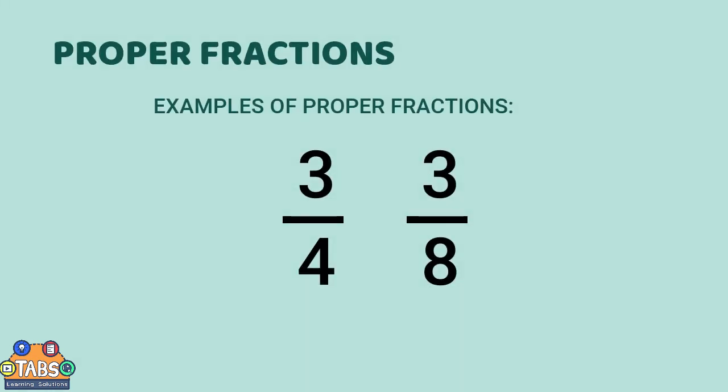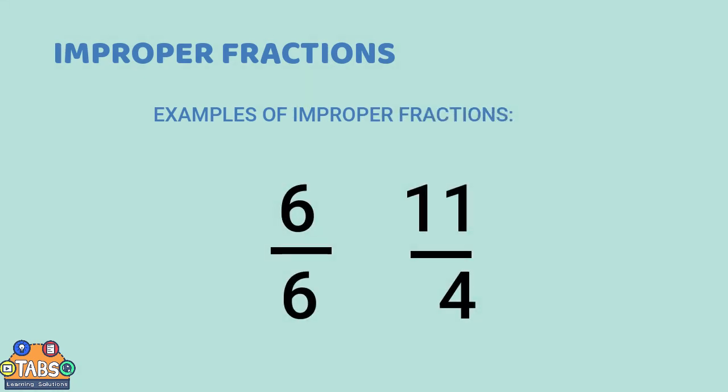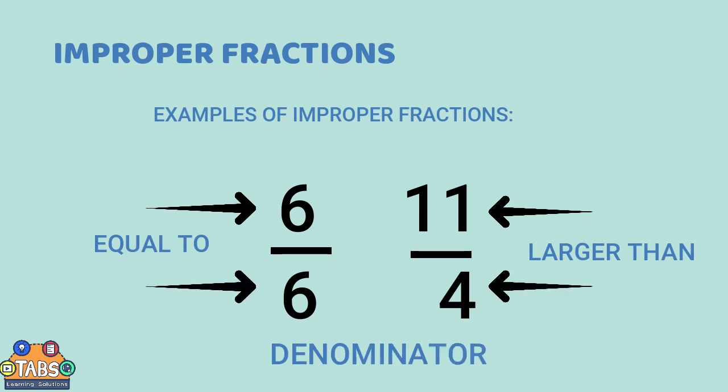Proper fractions. Proper fractions are fractions in which numerator is less than the denominator. Improper fractions. Improper fractions are fractions in which the numerator is larger or equal to the denominator.